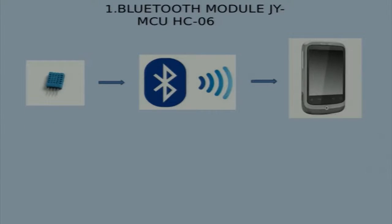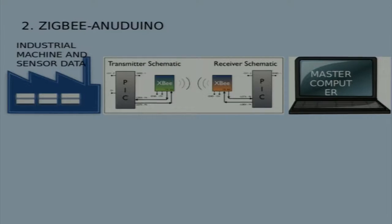This is the DHT11 module, which displays the dew point, humidity, and temperature. Next is the Zigbee module — this is an RF module that works at 2.4 GHz frequency. There is a coordinator XB at the microcontroller and a router XB. We again used it to control an LED.